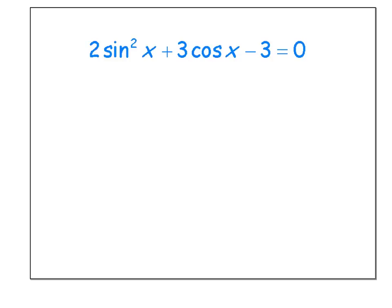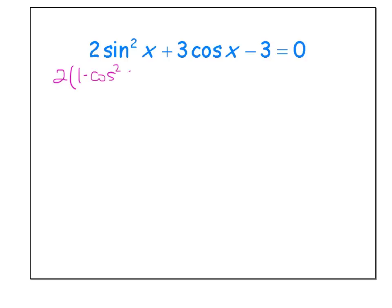Now let's look at this example: two times sine squared x plus three times cosine x minus three equals zero. Notice we have two different trig functions and a constant term — this is really a trinomial. The issue is we have different functions: sine squared and cosine. So we want to change sine squared into something connected to cosine using the Pythagorean identity. We can rewrite this as two times (one minus cosine squared x) plus three cosine x minus three equals zero.